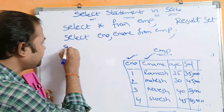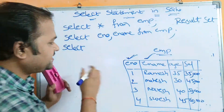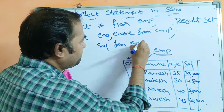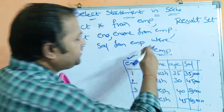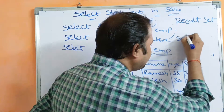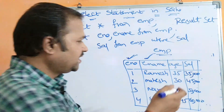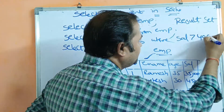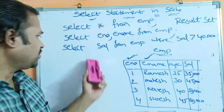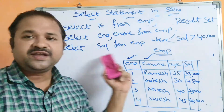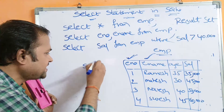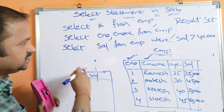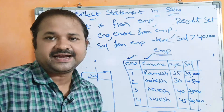We can use a WHERE condition as well. For example: SELECT salary FROM employee WHERE salary > 40000. Here we use various operators; in this case, the greater-than operator. Only the salary column will get displayed from the employee table where the salary is greater than 40,000.